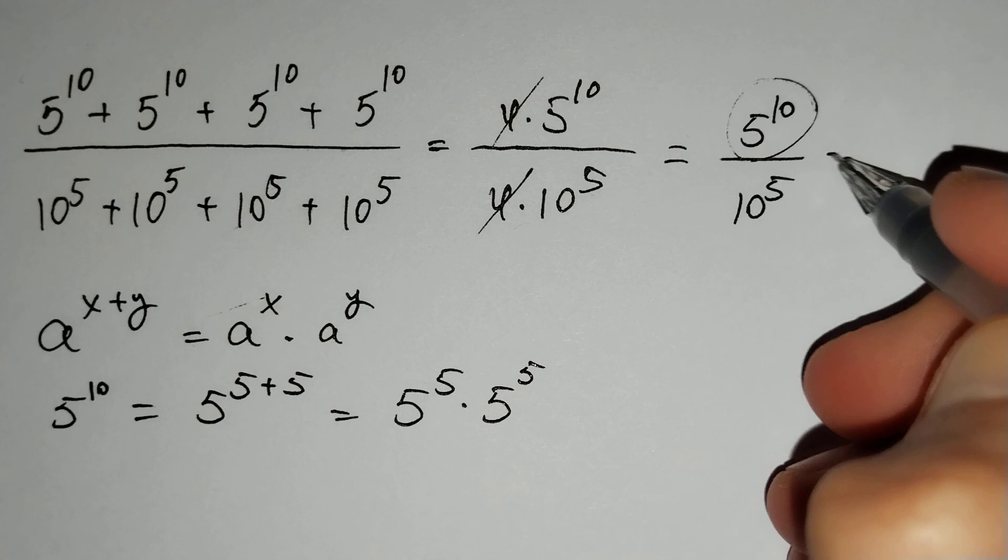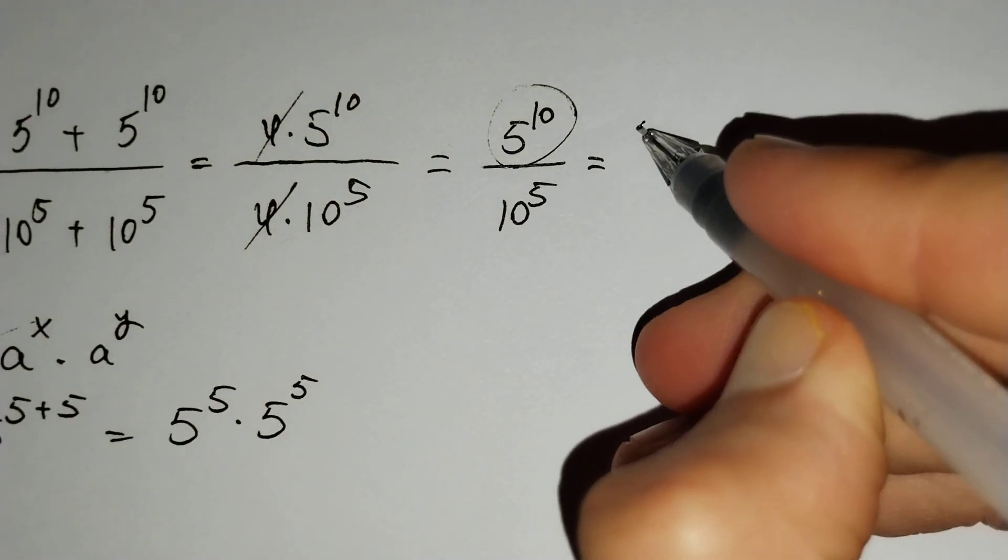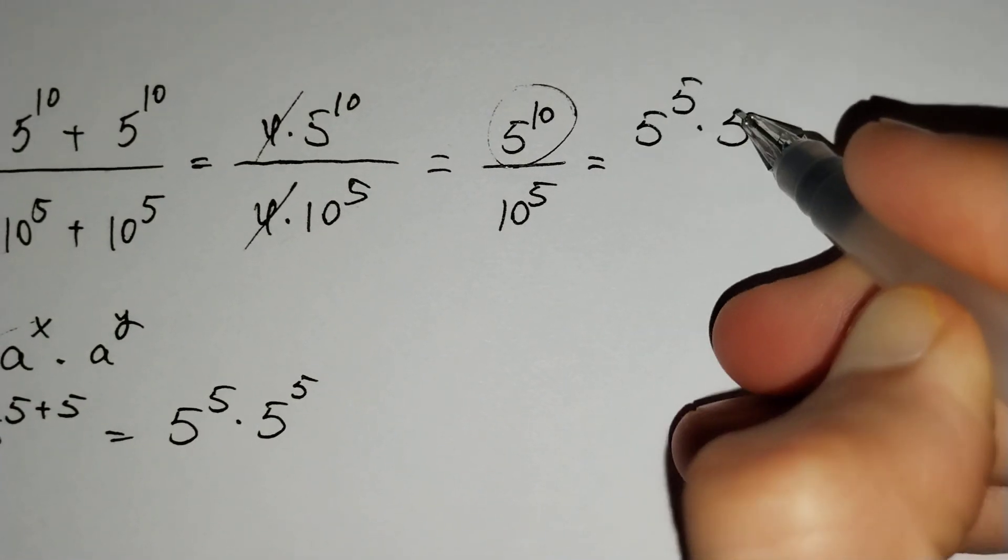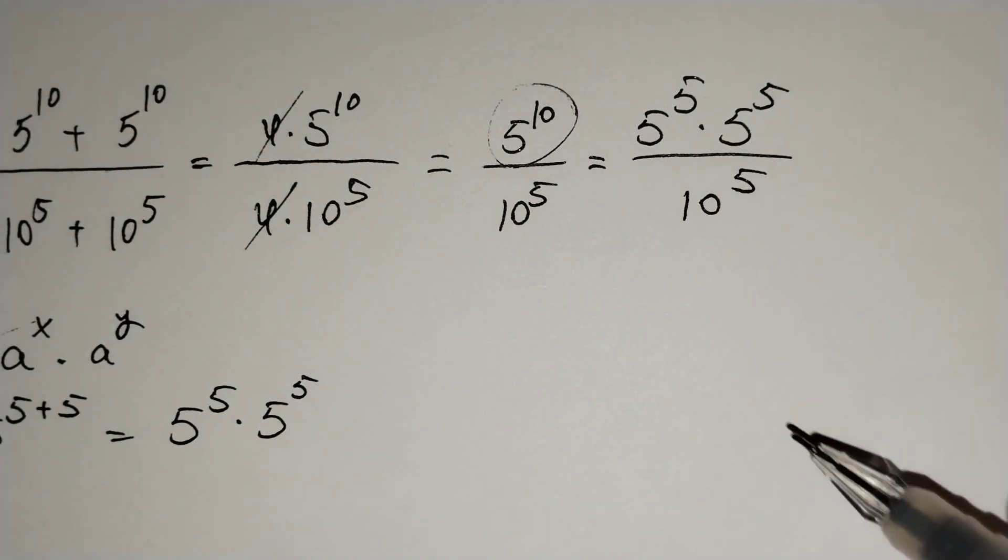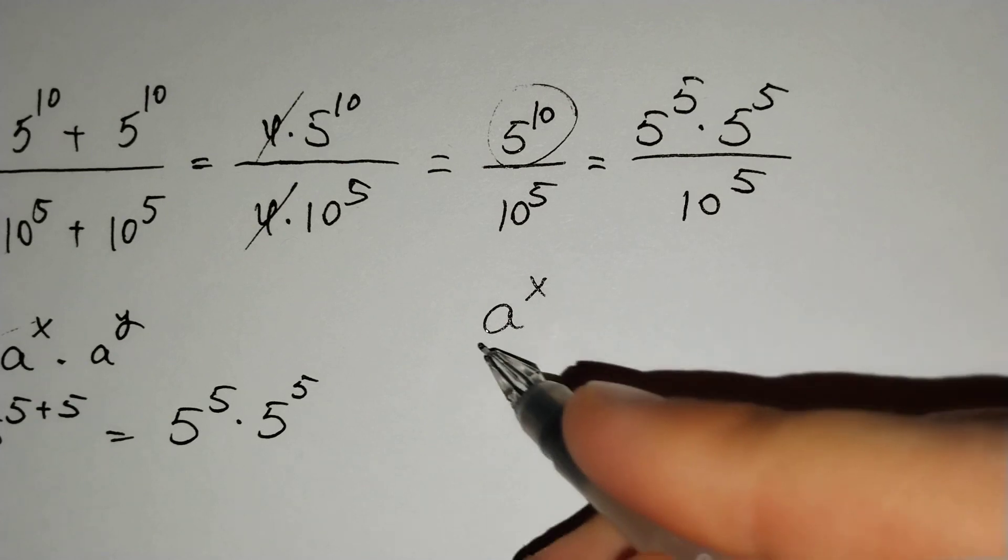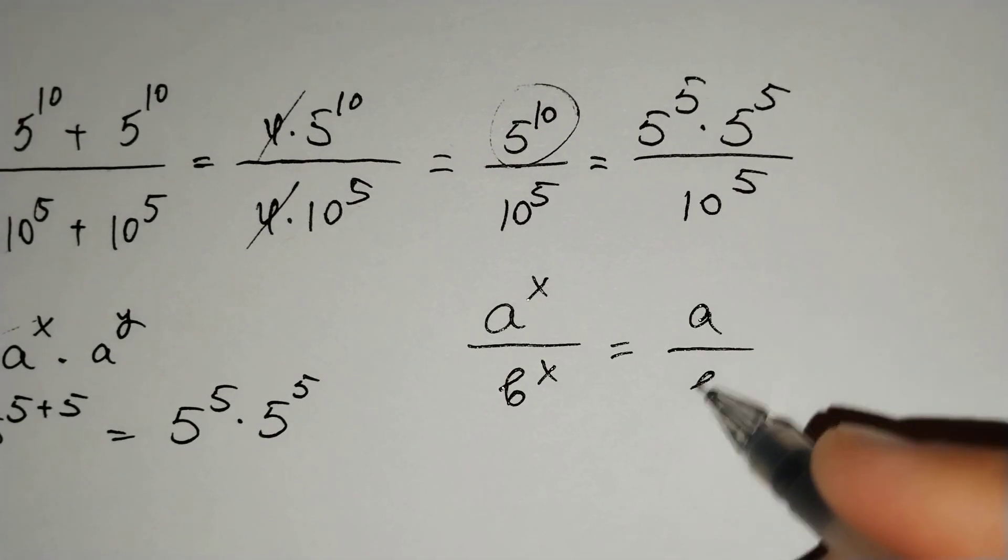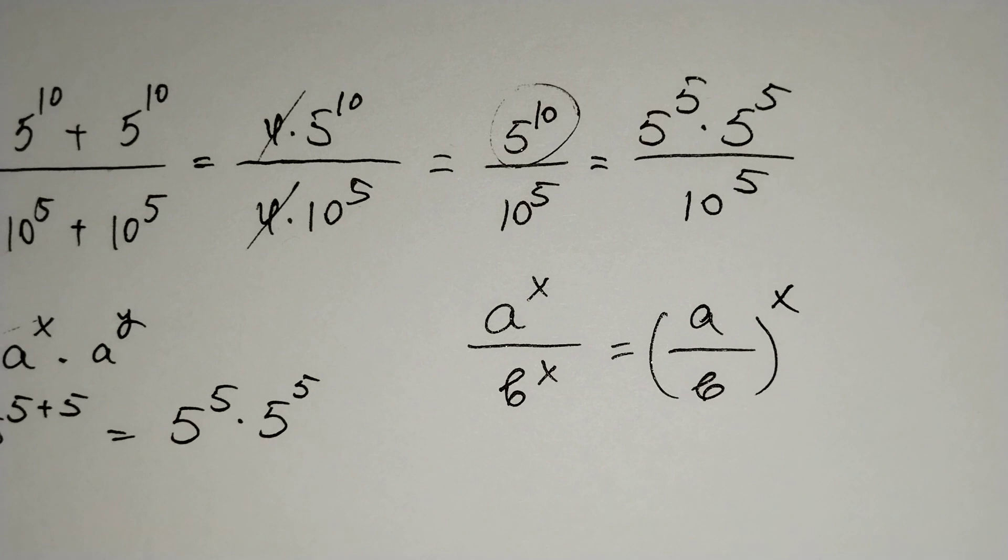Let's put it above. This is equal to 5 to the power 5 times 5 to the power 5 over 10 to the power 5. Then we know that a to the power x over b to the power x equals to a over b to the power x, in brackets of course.